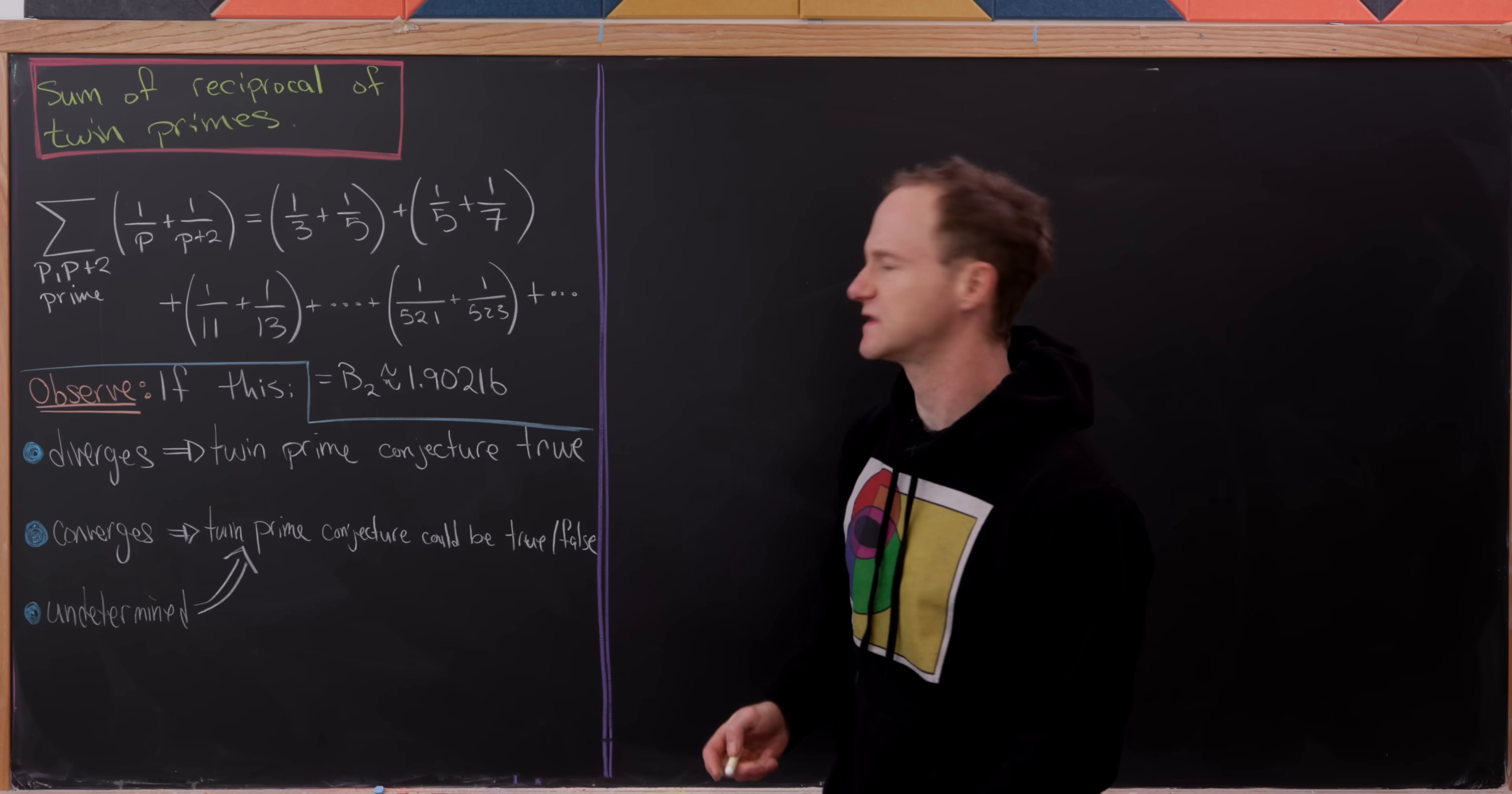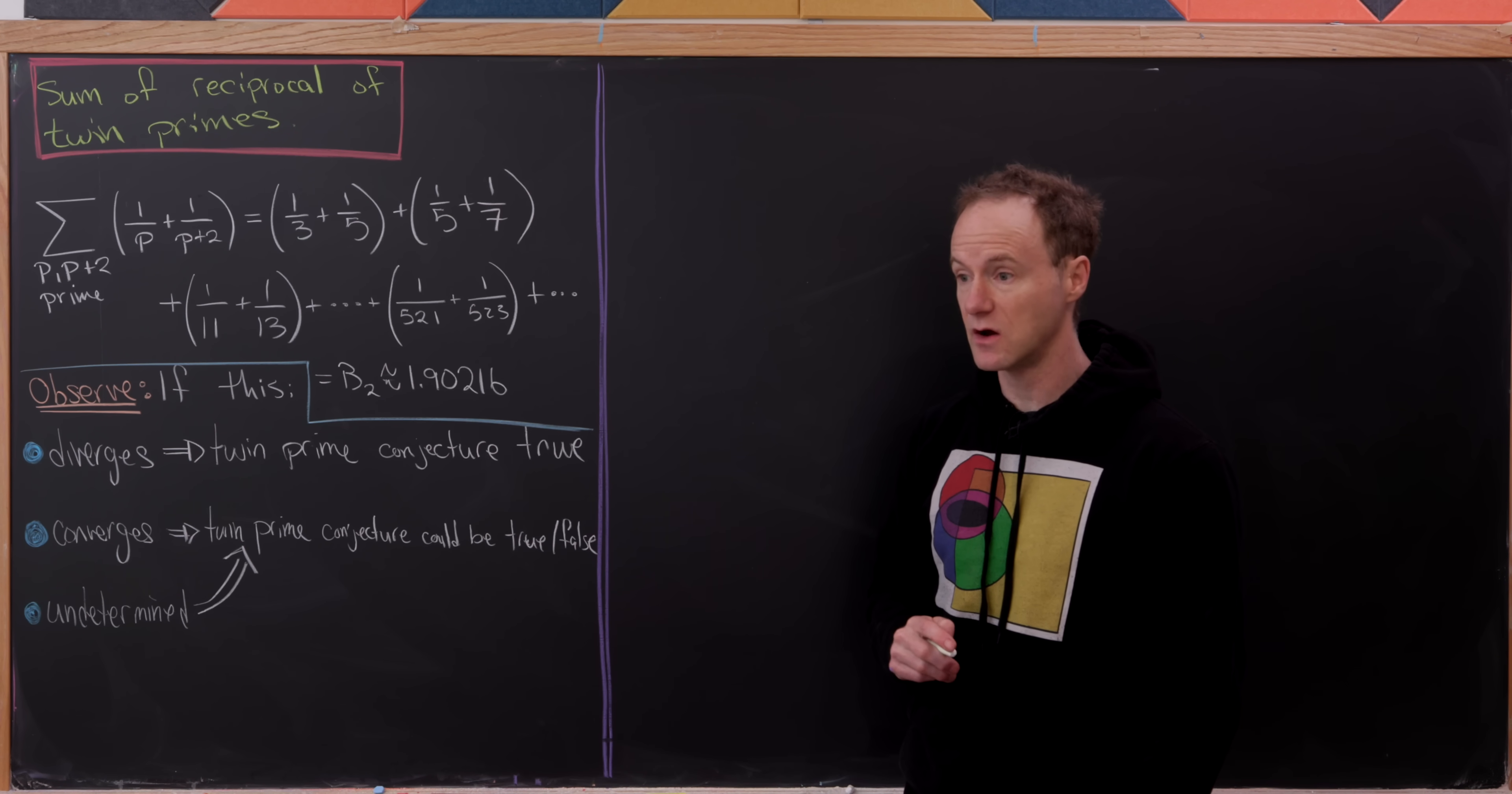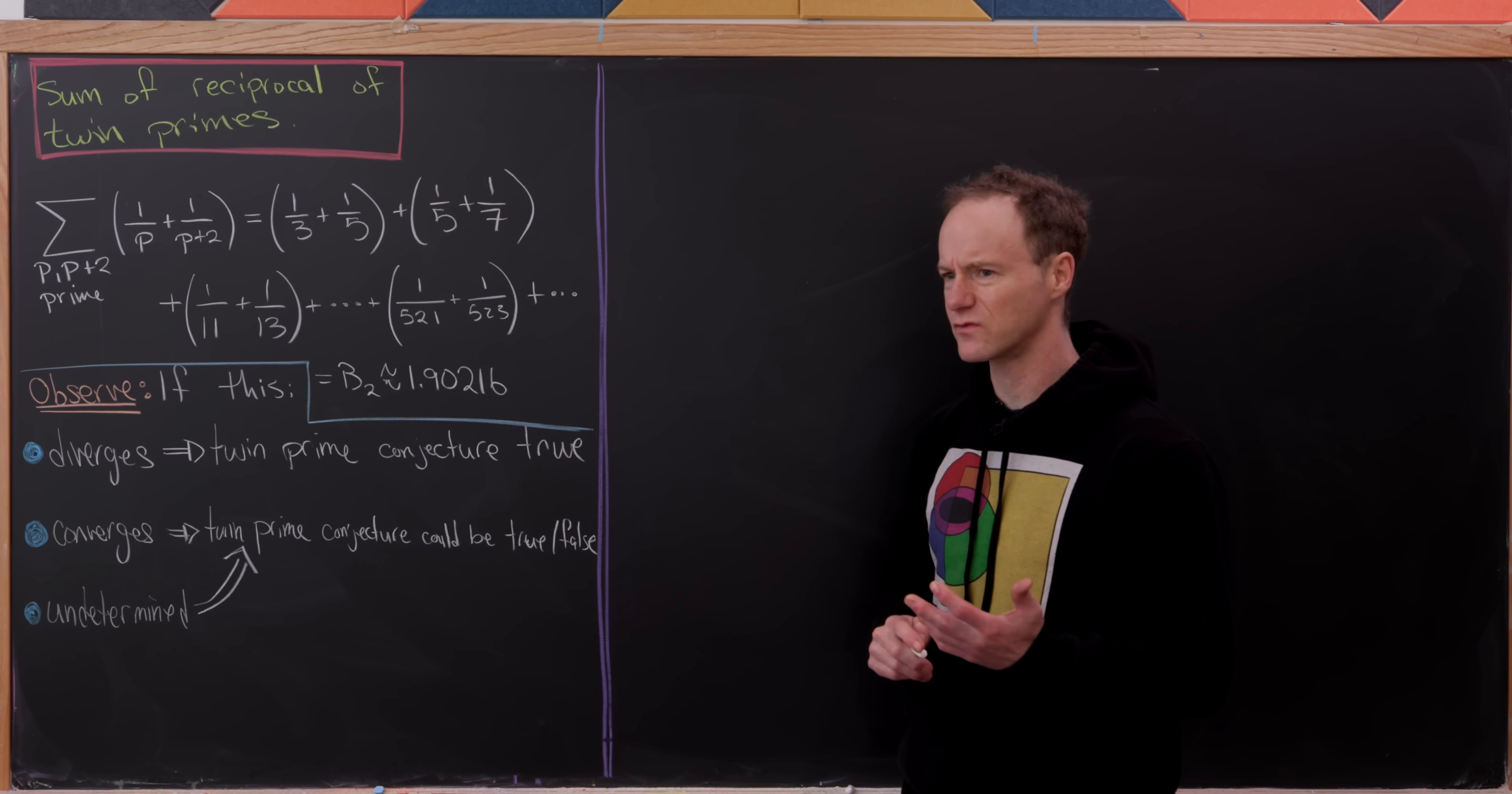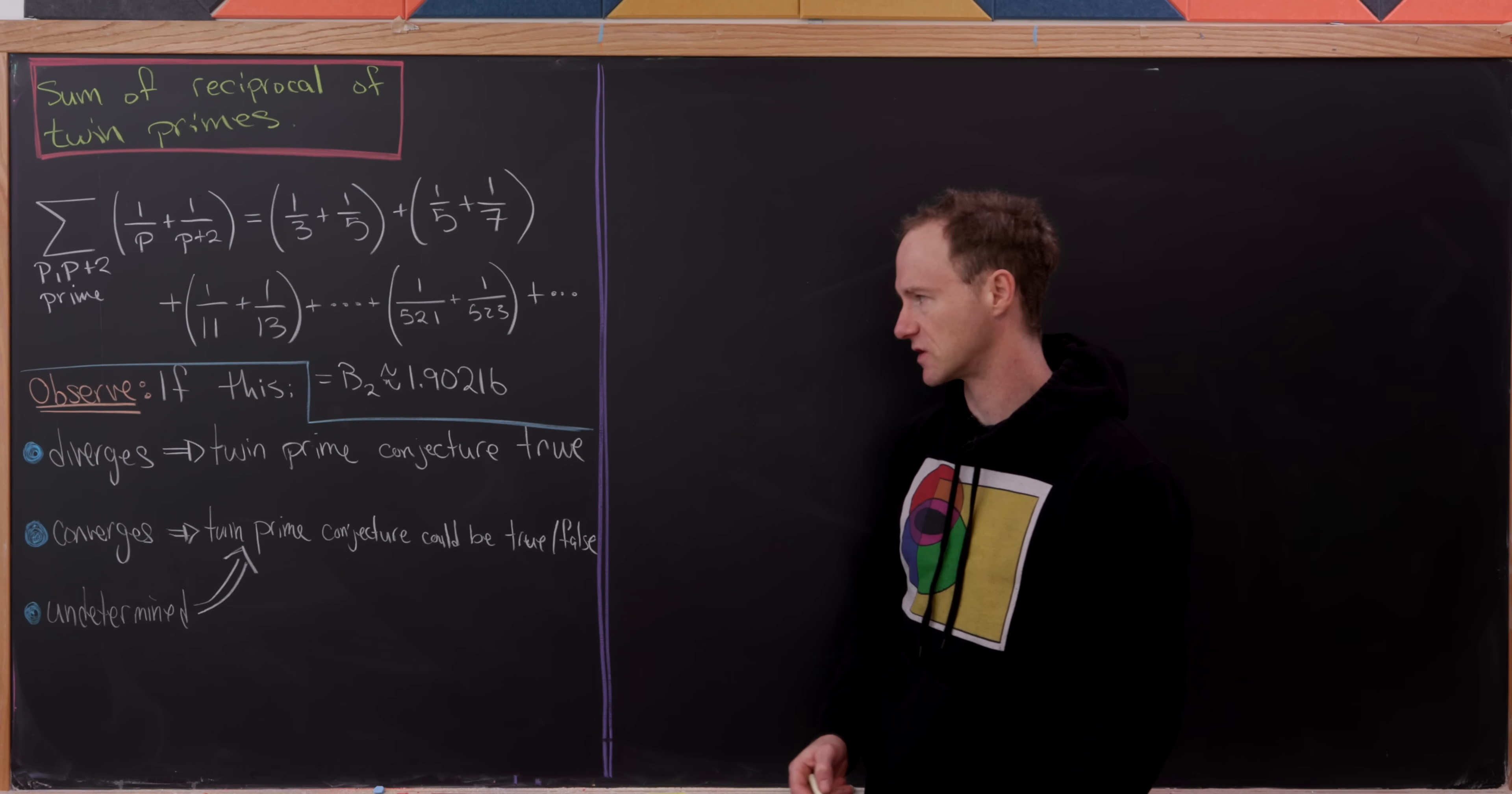And then of course this goes on and on and on, and the exact value of this is unknown precisely because we can't really be totally sure whether or not this has finitely many or infinitely many terms.